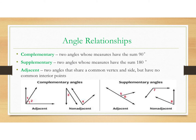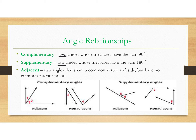The first three angle relationships we're going to talk about — you've probably heard the first two back in elementary or middle school: complementary and supplementary angles. The key word here is that it must be only two angles whose measures sum to 90 when complementary, and two angles that sum to 180 when supplementary. Adjacent angles are two angles that are next to each other — they share a common vertex and a common side, but they do not have any common interior points, so they don't overlap.